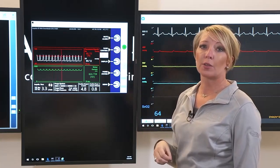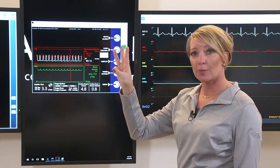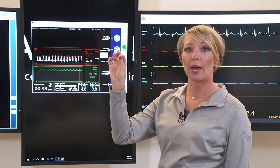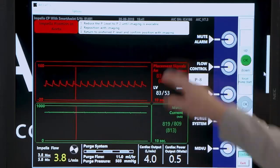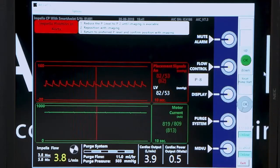It is important to understand that there are three different colors of alarms, and those are in order of importance: red, yellow, and white. So the red alarm means that the pump is not functioning to support the patient. This is going to be like your pump position wrong alarms.